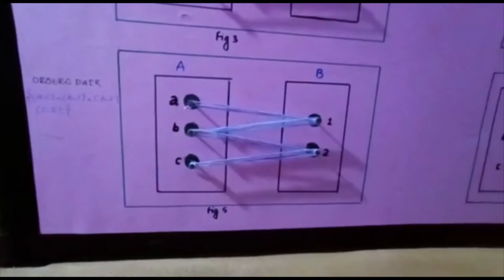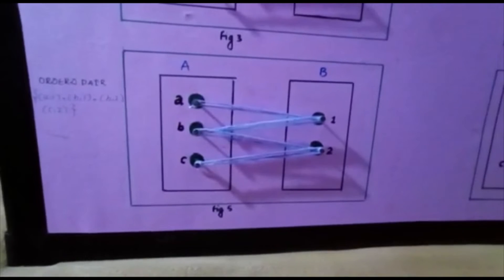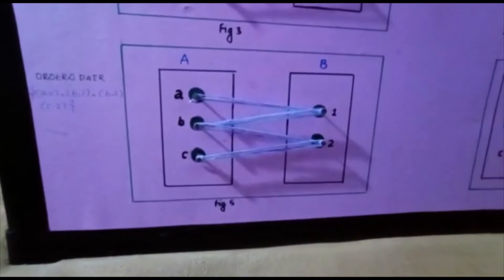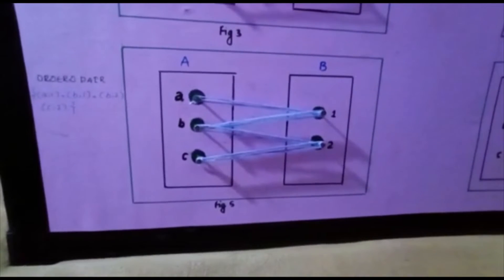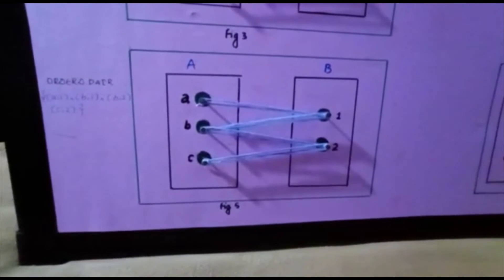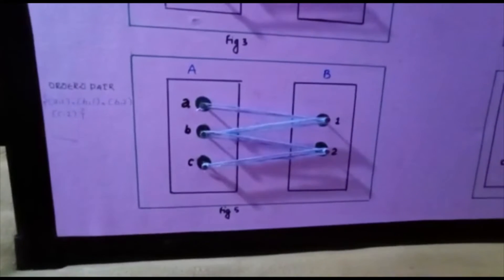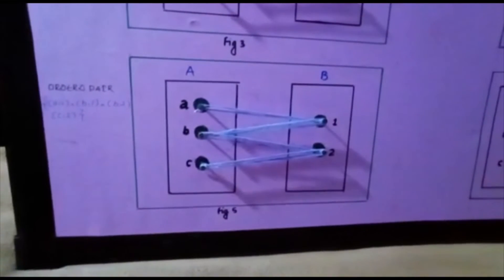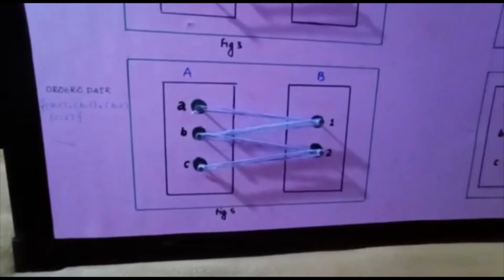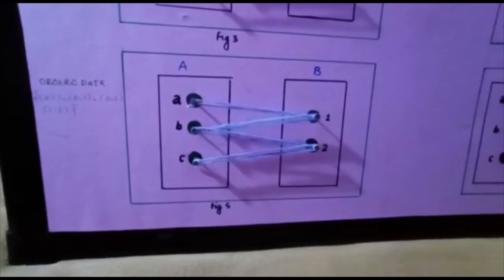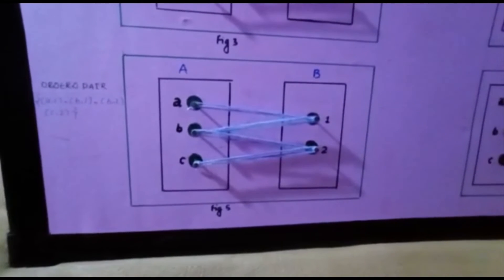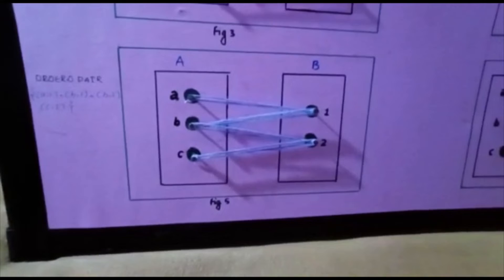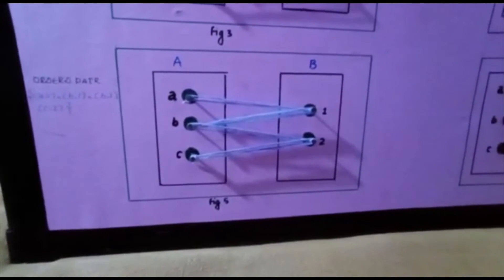Let us now take another example as shown in figure 5. All elements in set A have images in set B. Its ordered pairs are (A,1), (B,1), (B,2), and (C,2). So, it is a relation but not a function, because element B in set A has two images in set B. Thus, it is not a function but it is a relation.